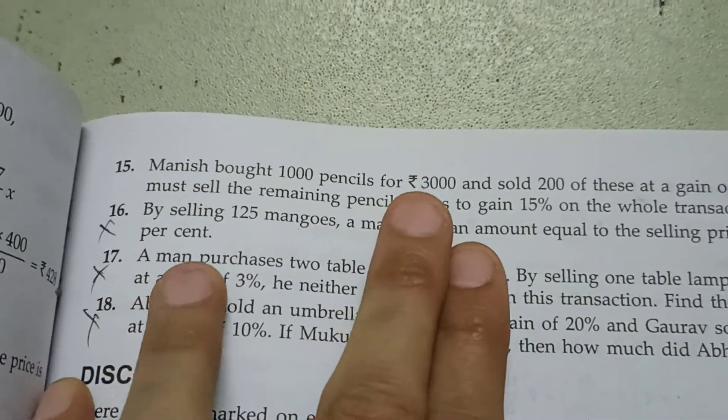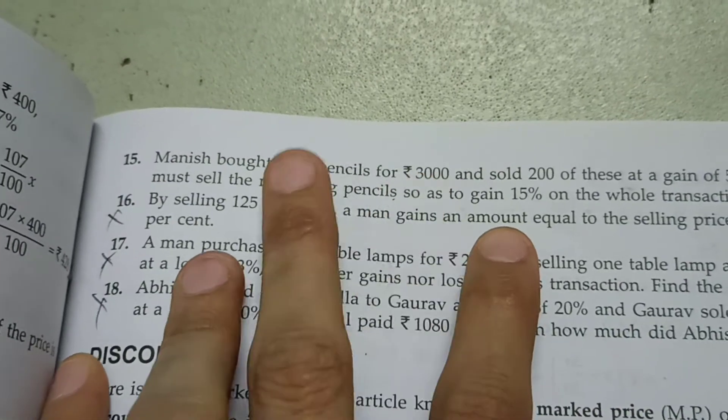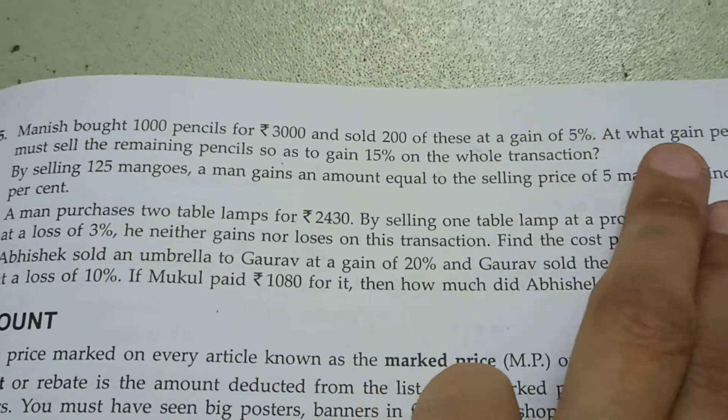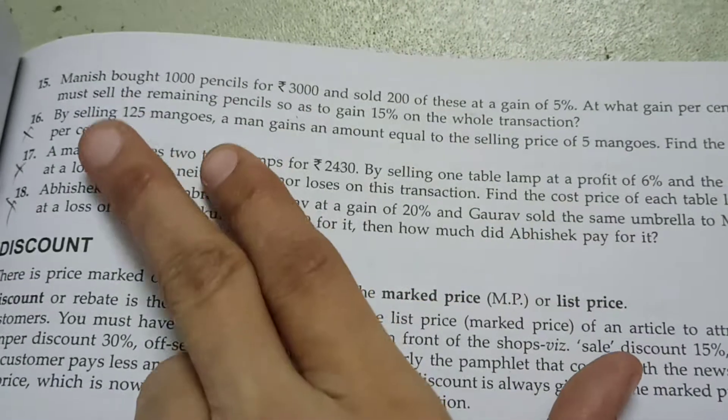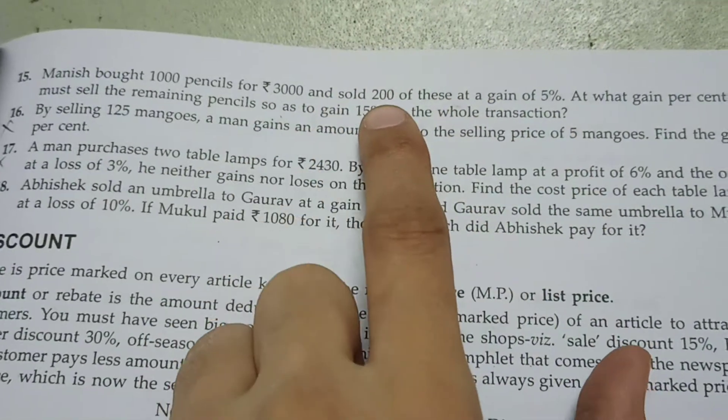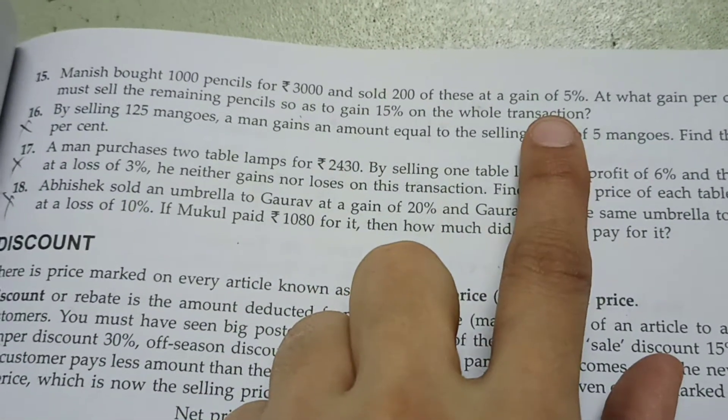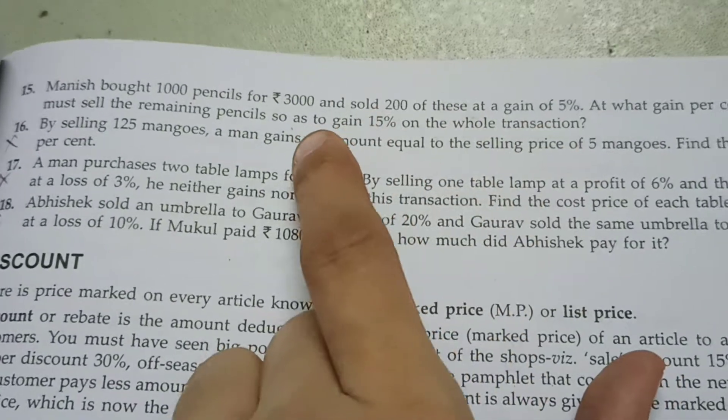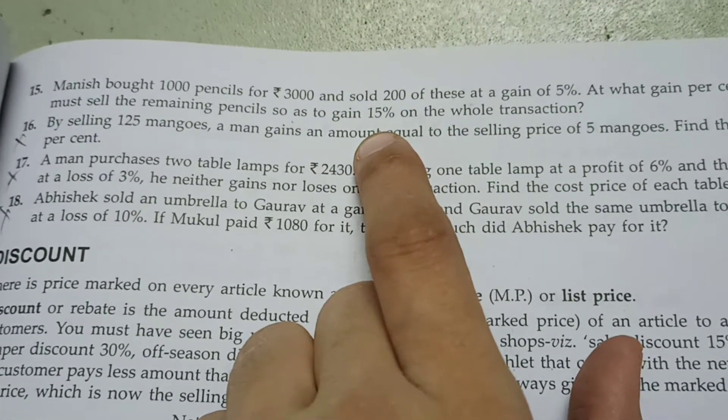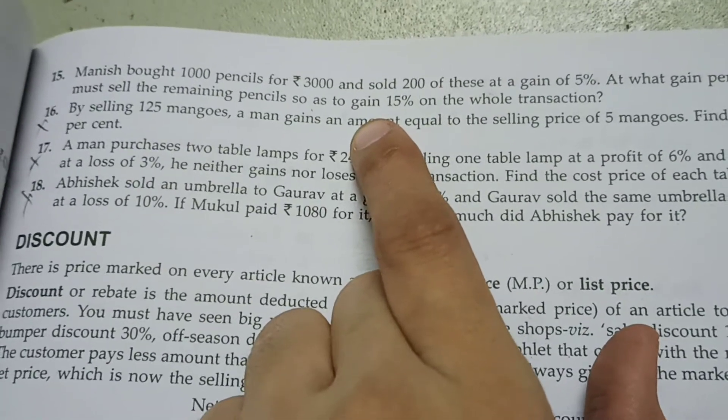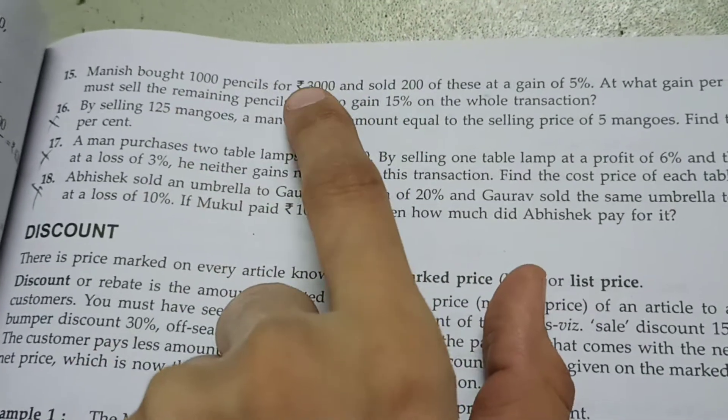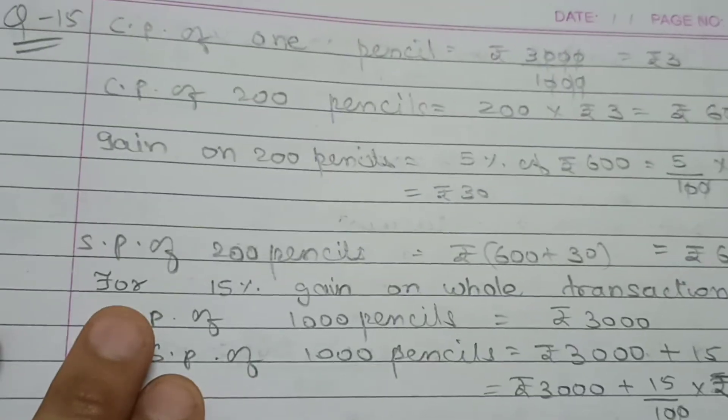Manish bought 1000 pencils for rupees 3000, so one pencil costs 3000 divided by 1000, which is 3 rupees. And sold 200 of these at gain of 5 percentage. At what gain percent must he sell the remaining pencils so as to gain 15% on the whole transaction? He sold 200 at 5% gain, and the whole transaction should have 15% gain. So, 800 pencils remain.